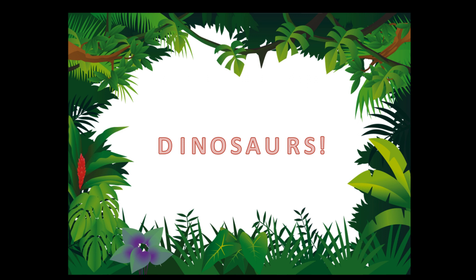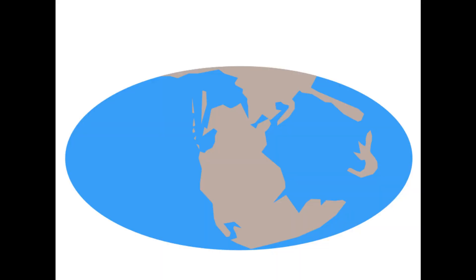Next, can you name the three periods of dinosaur history? Hopefully you can name at least two — generally when I ask this question of people, we get two of the three. Obviously, the three are the Triassic period, the Jurassic period, and the Cretaceous. Usually, people get the Jurassic and Cretaceous, but the Triassic is often forgotten. So we'll take a look at all three.